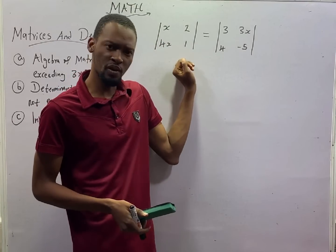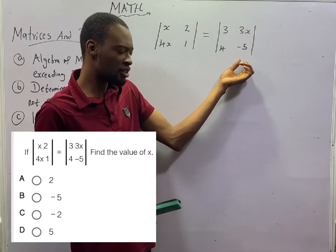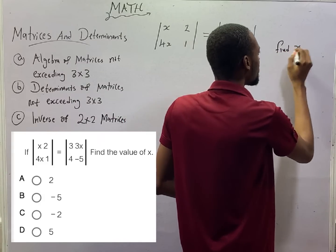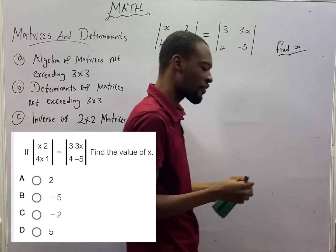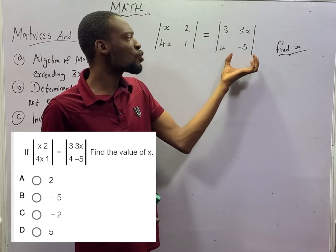This is the question before us. It says this matrix is equal to this matrix. What are we to look for? Find S. If this matrix is equal to this matrix,